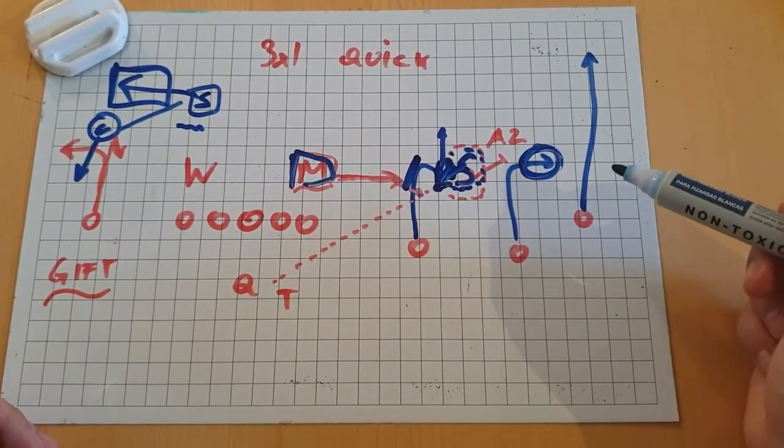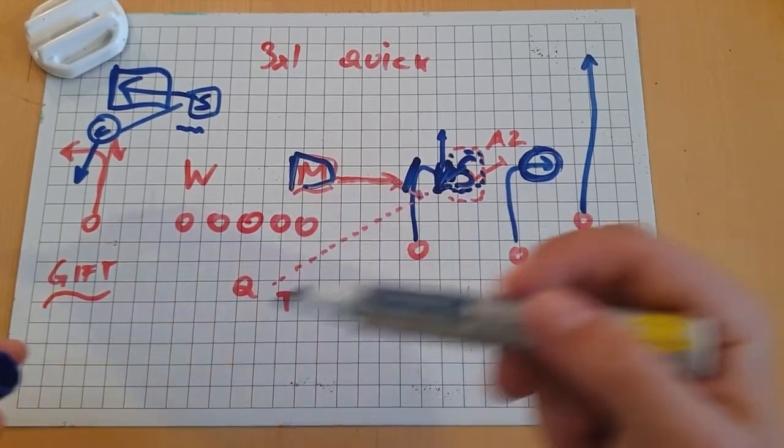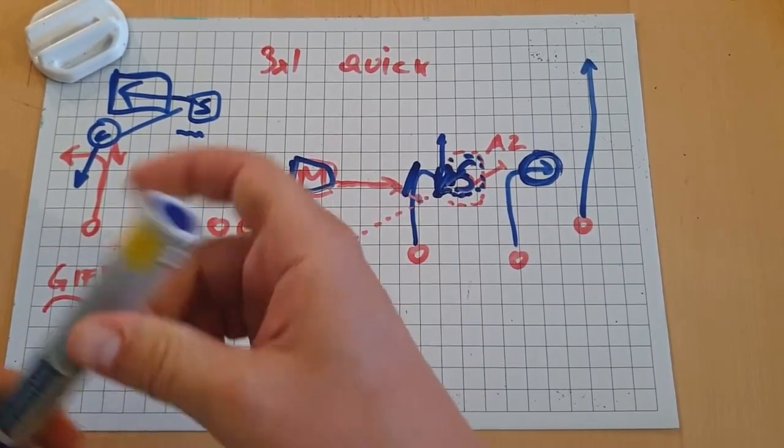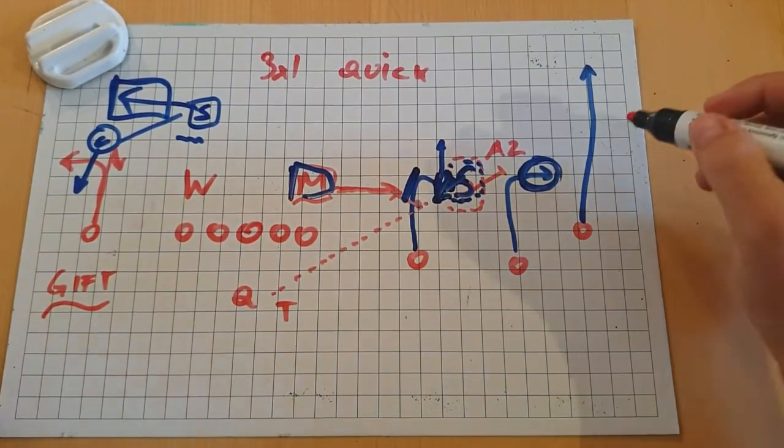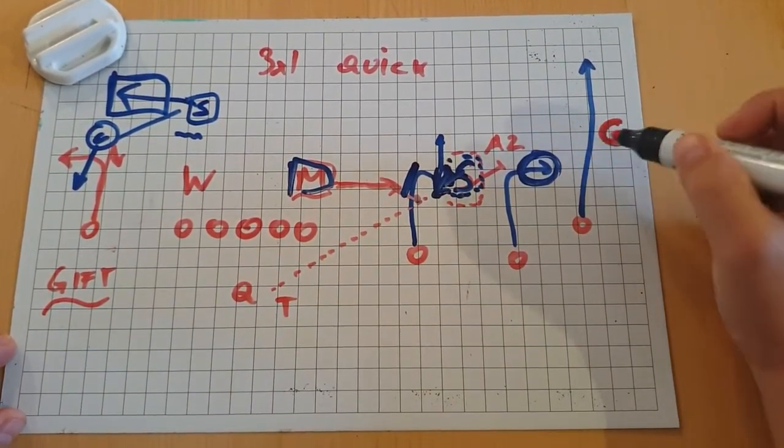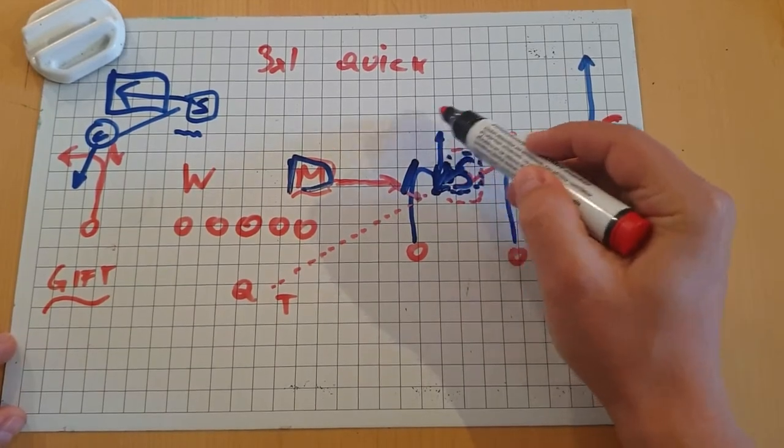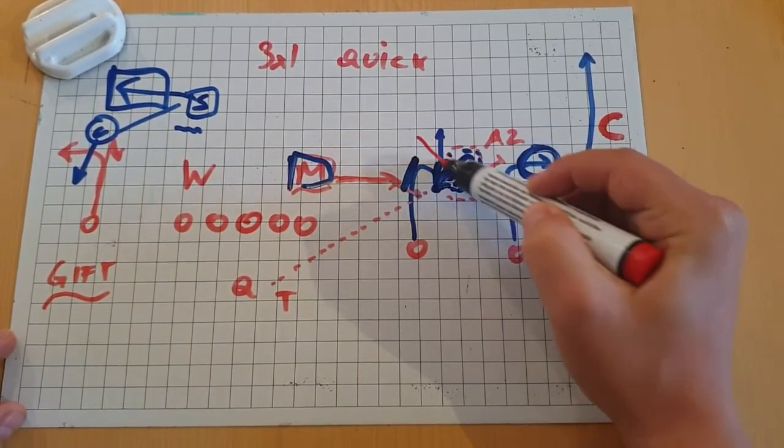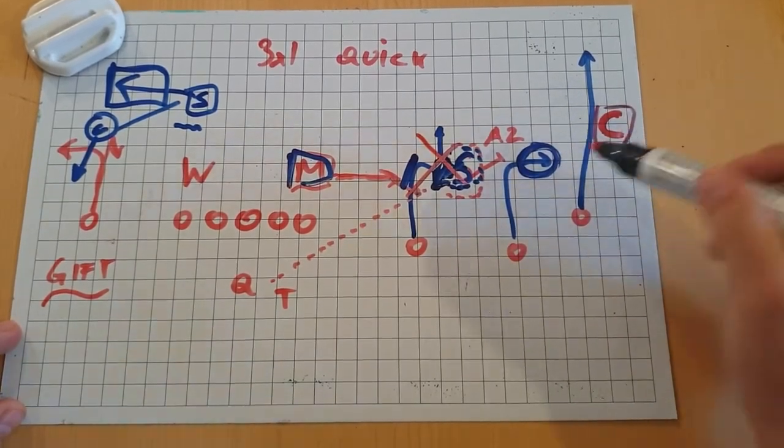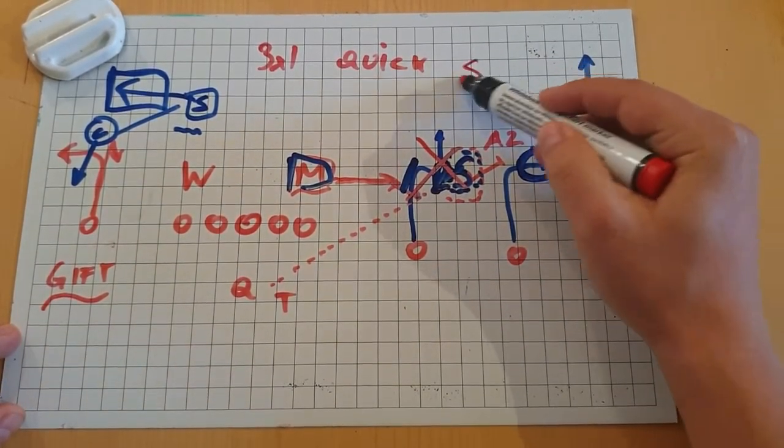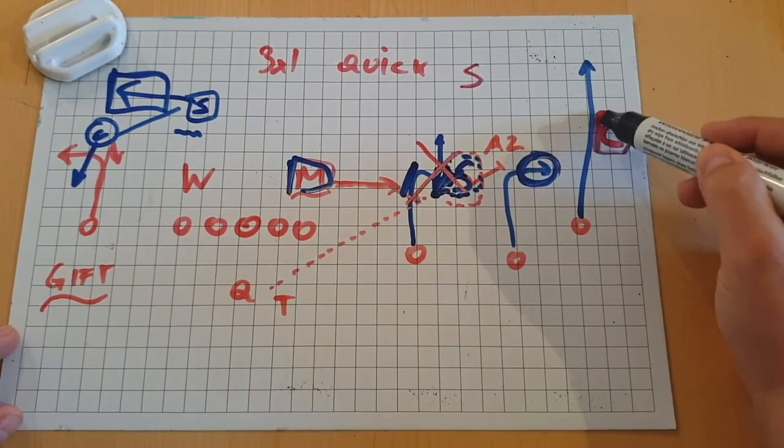So if they take away number three with the sam linebacker and we have to cancel this out, basically now it becomes a regular fade out read on the cornerback against this number two and number one wide receiver here. And this is something we don't like that much because if this cornerback drives the out route by number two hard, we have a hell of a long throw to get to this cover two to the field side.